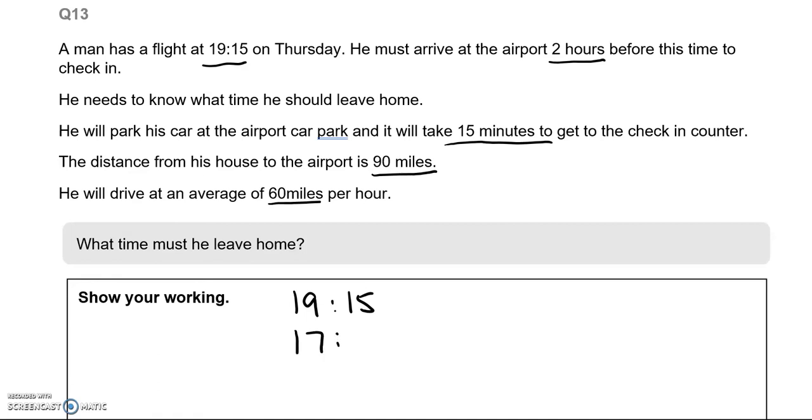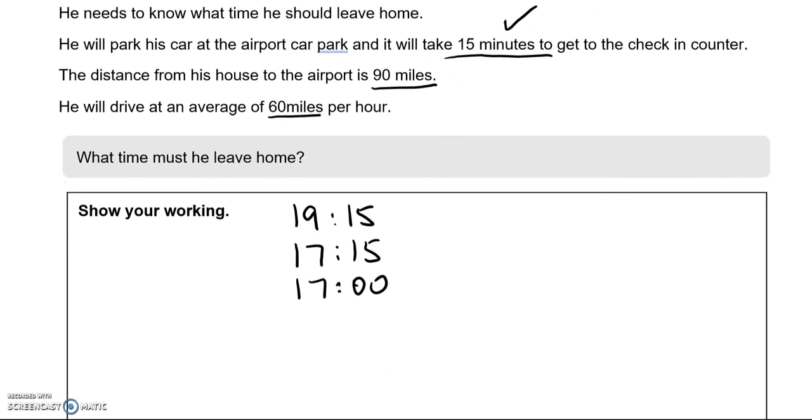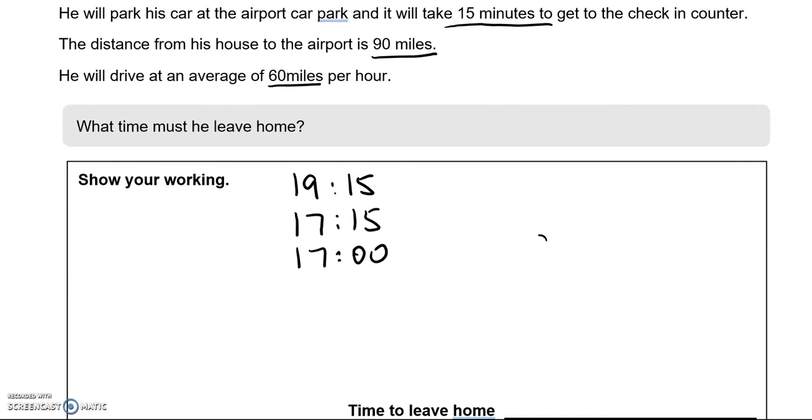But he needs to arrive at the airport 2 hours before that. So that should be 17:15. So we've dealt with this part. Now looking at the next bit. He's going to park his car at the airport and it's going to take 15 minutes. So if I take away now 15 minutes, this is going to be 17:00.